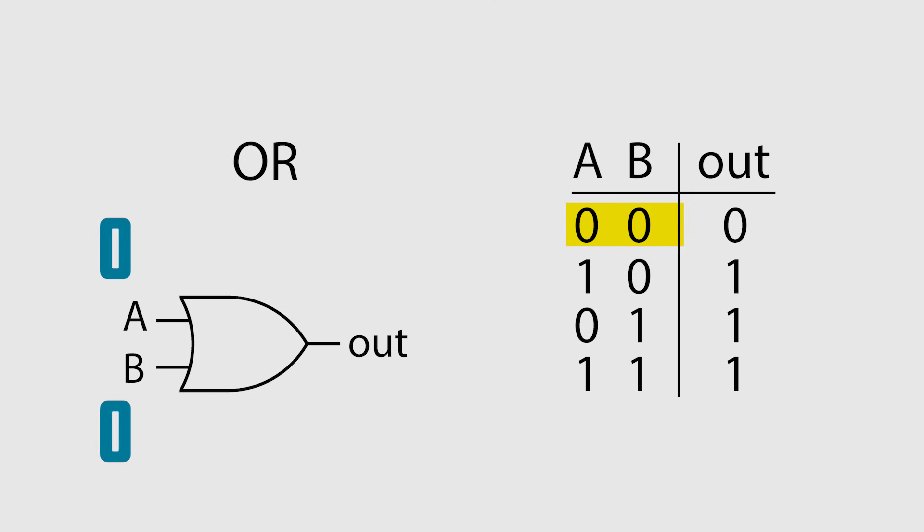Let's move on to OR gates. In an OR gate, if both inputs are low, output is low. If A OR B is high, the output is high. Since when either A OR B is high, the output is high. When both are high, the output is still high.